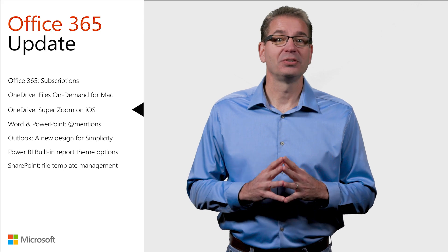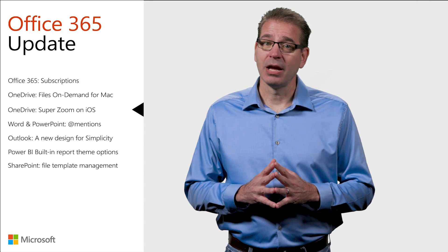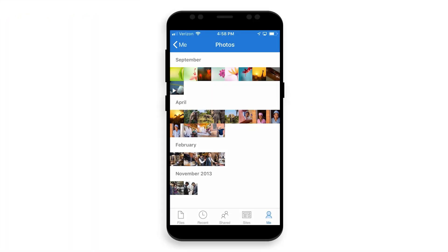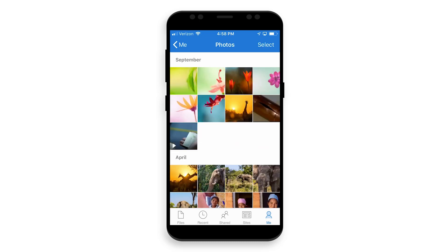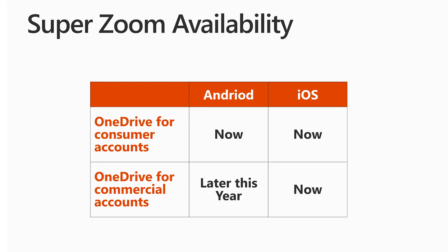Who doesn't store pictures on their phone or tablet? The new Super Zoom feature enables OneDrive on iOS users to use a pinch gesture to zoom in and out of the Photos view. Zoom out to easily scroll many photos at a time, or zoom in to get a larger preview of your photos as you browse. This feature is supported on both OneDrive for Business as well as consumer accounts on iOS. For those of you using OneDrive on Android devices, Super Zoom is already available but only for OneDrive consumer accounts and should be coming to OneDrive for commercial accounts later this year.